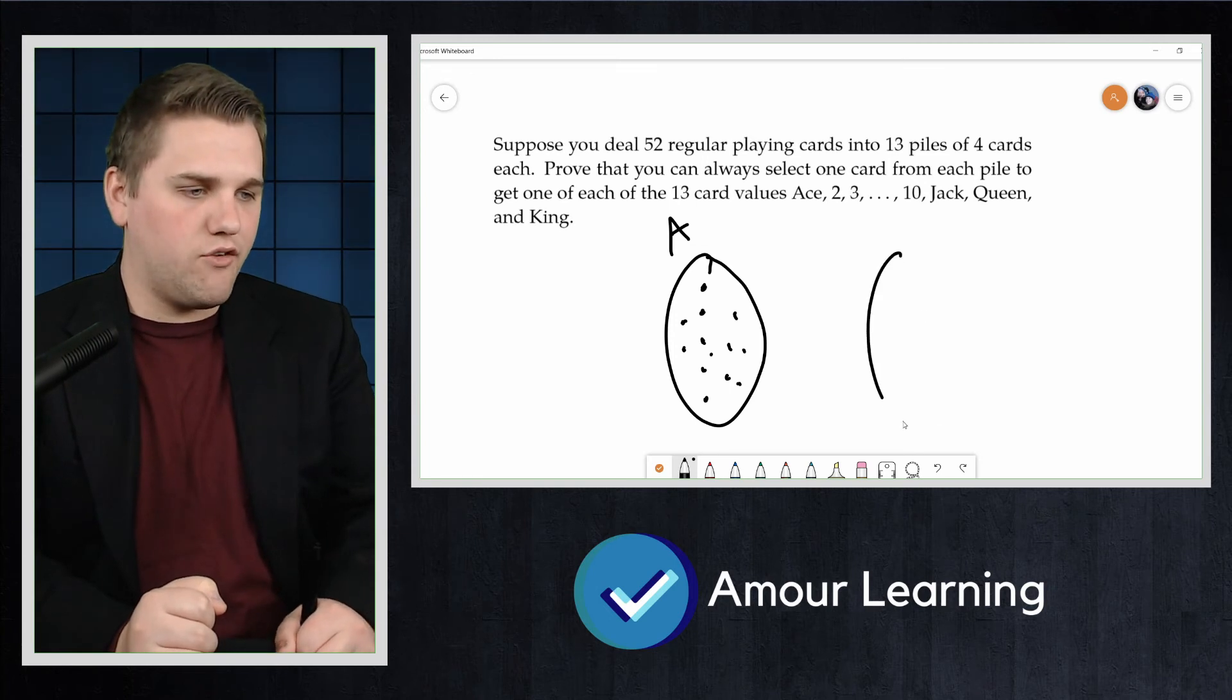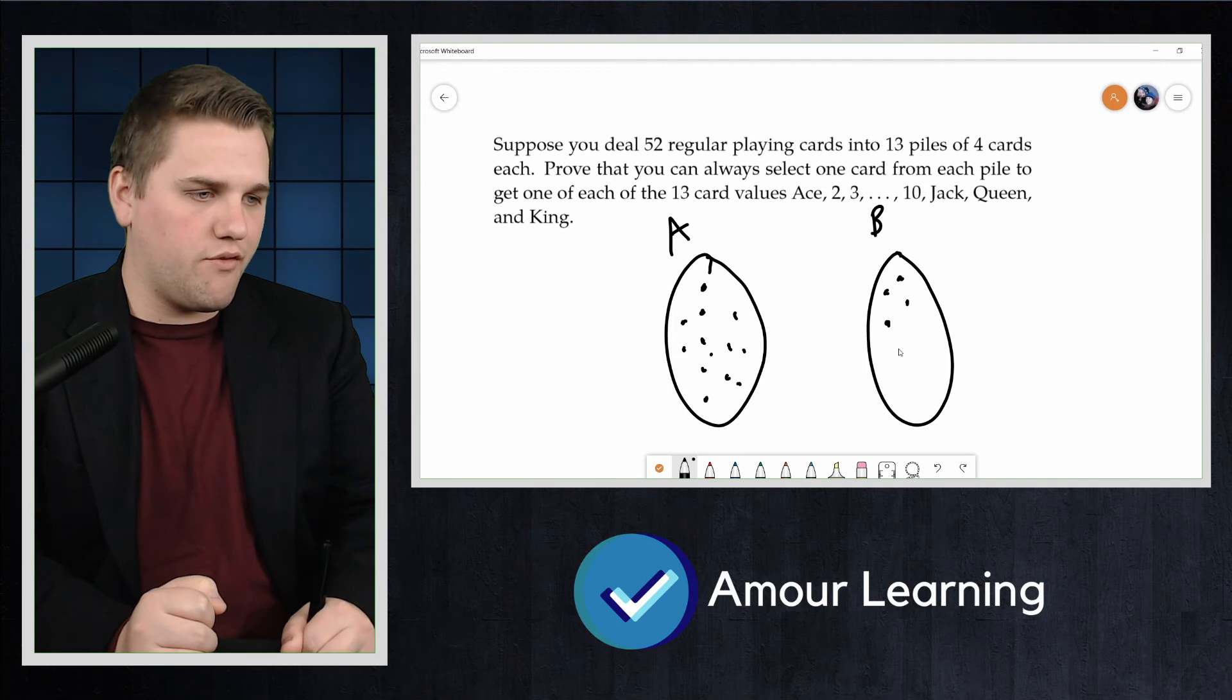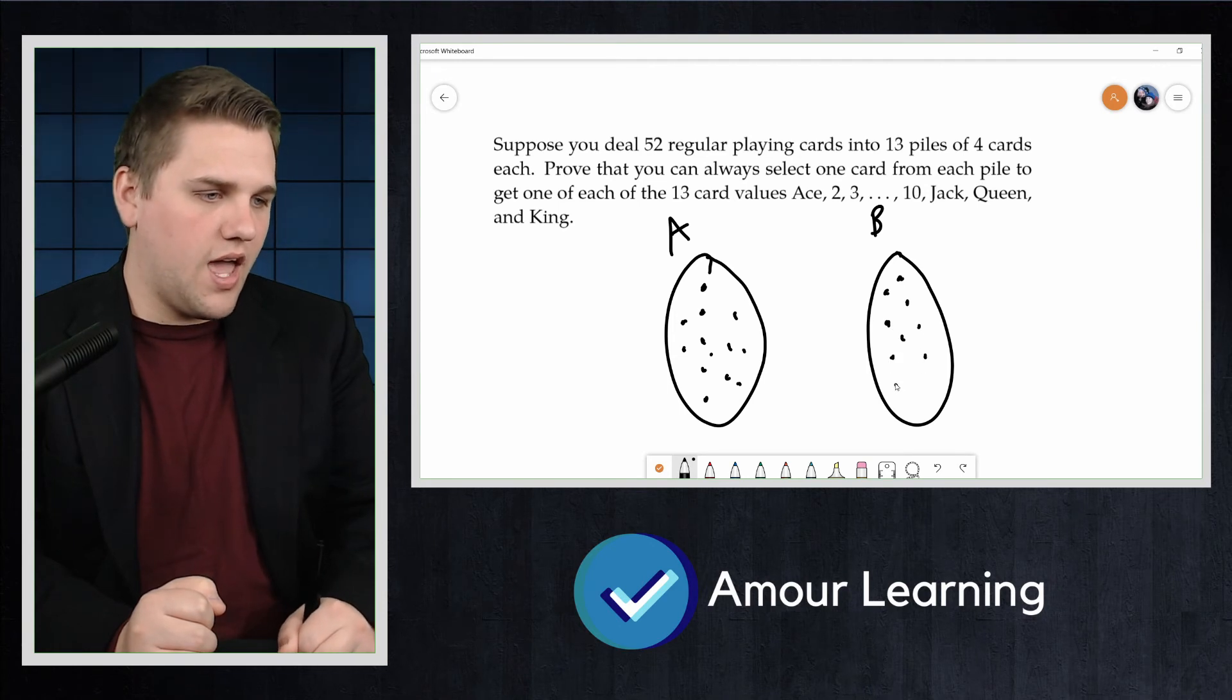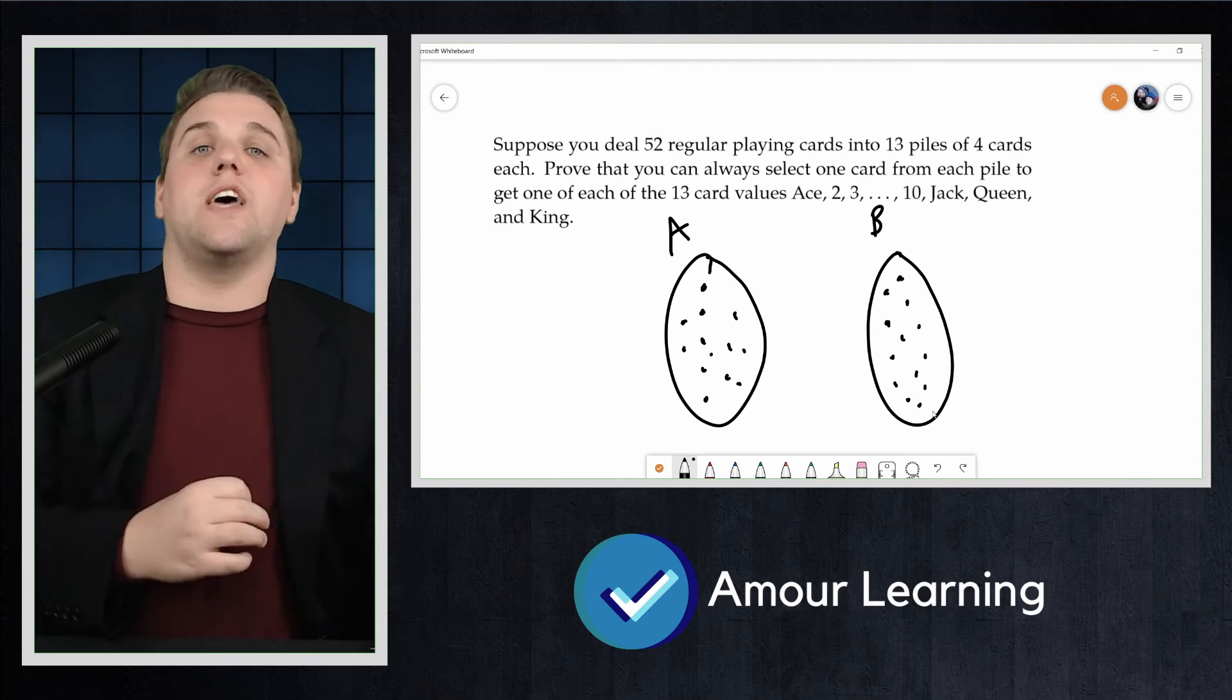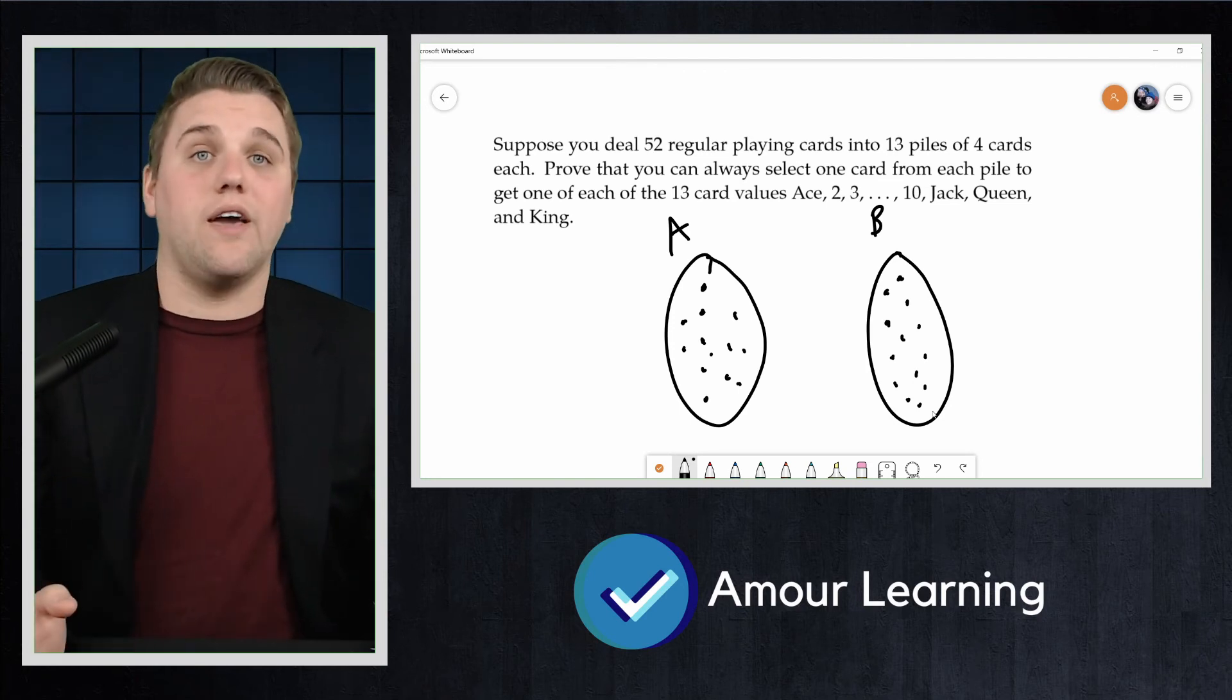And then we're going to do 13 vertices in set B, each representing one of the 13 piles.